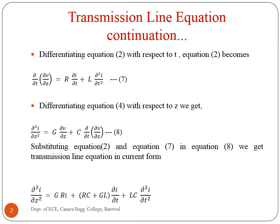In the last class we derived the transmission line equation in voltage form. Now we will derive the transmission line equation in current form. Firstly, differentiate equation number two with respect to T to get equation number seven. Equation two is: −∂V/∂z = R·i + L·∂i/∂t, which was derived in the last class by applying KVL to the transmission line circuit.